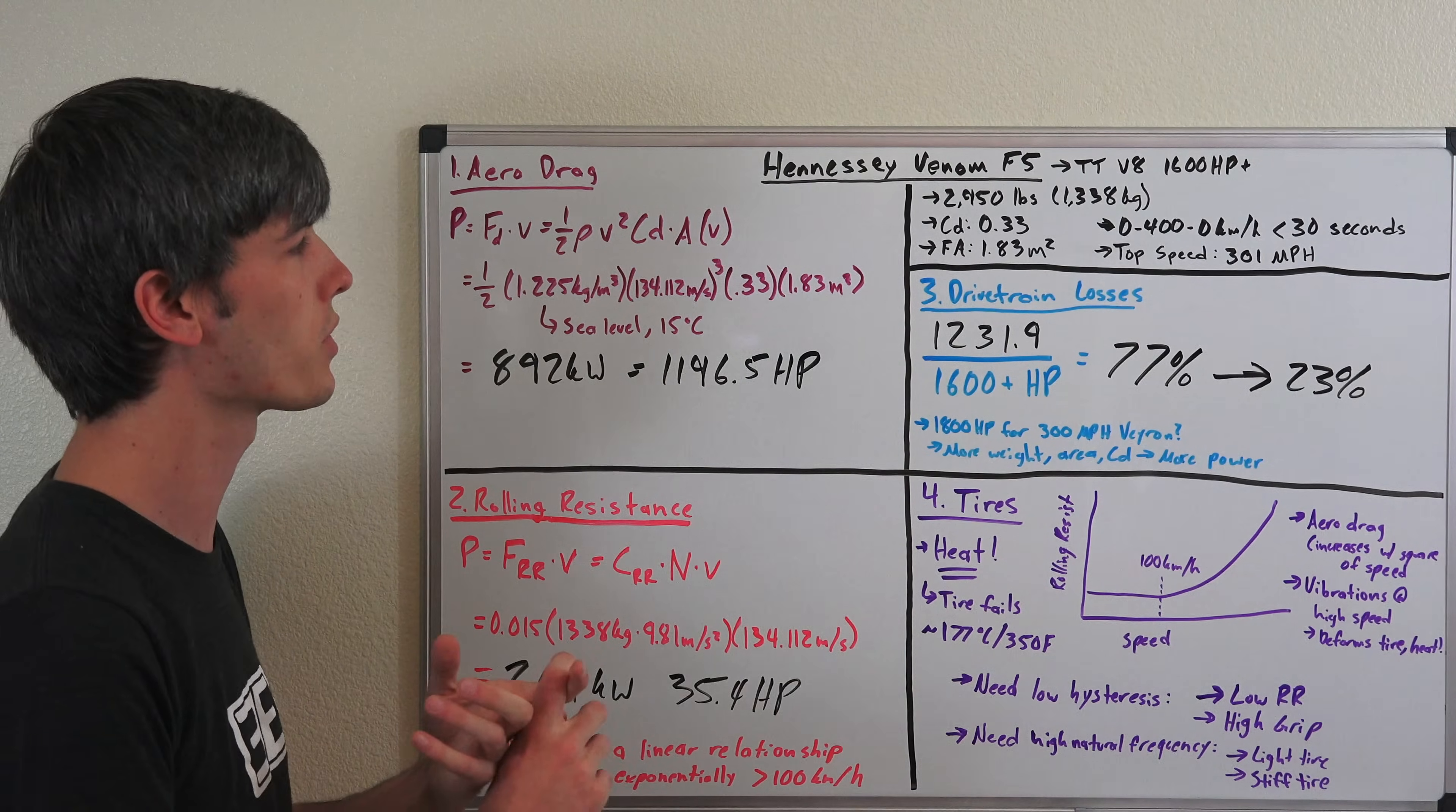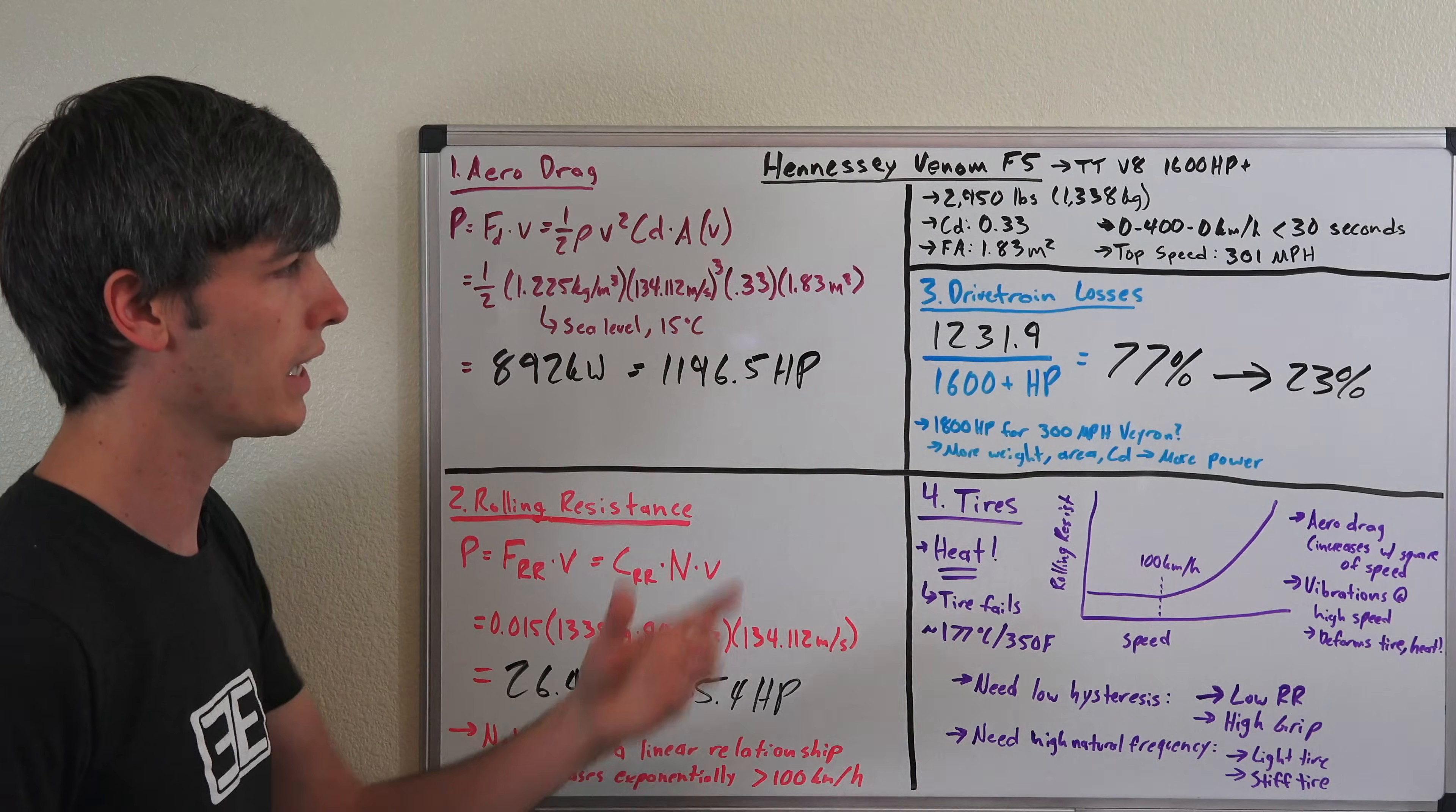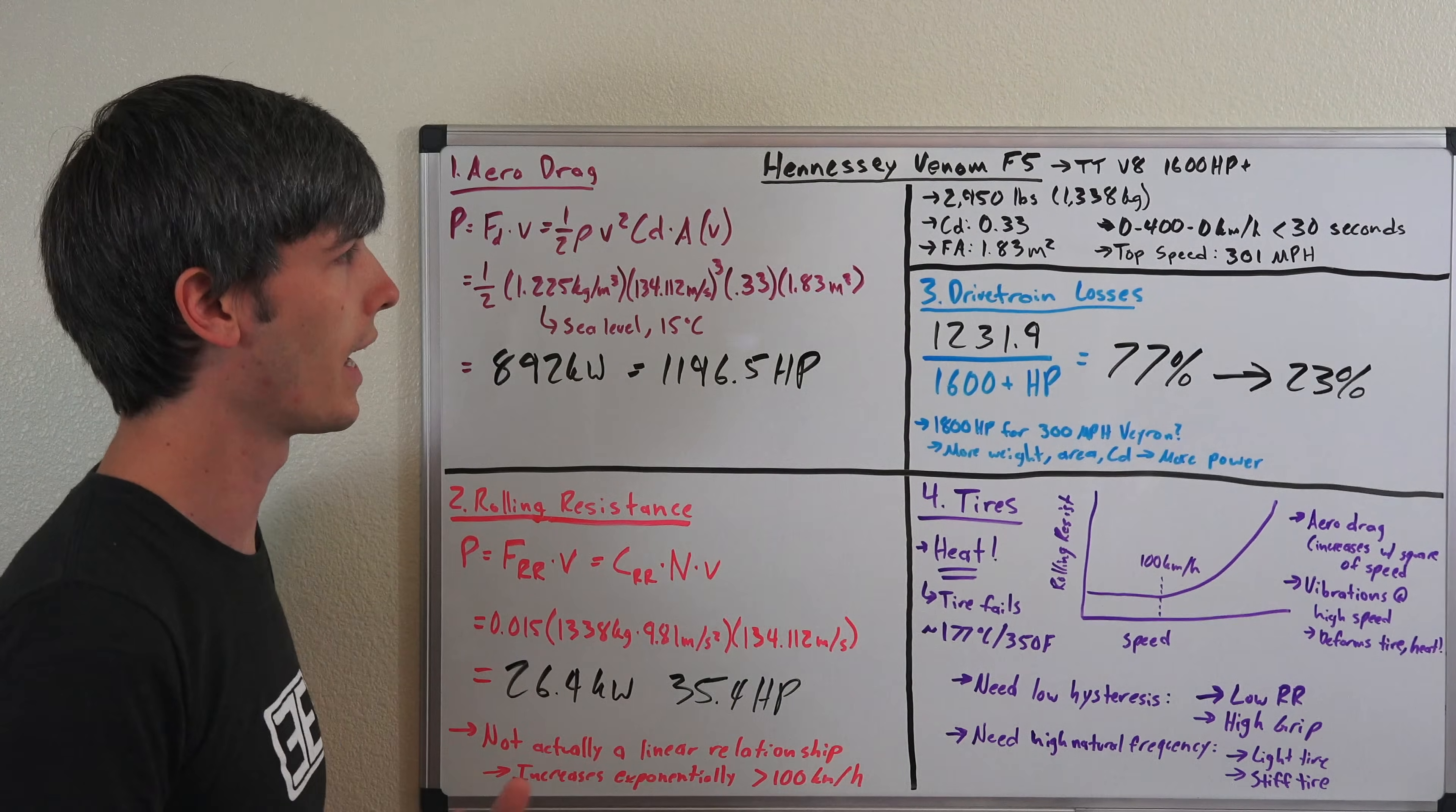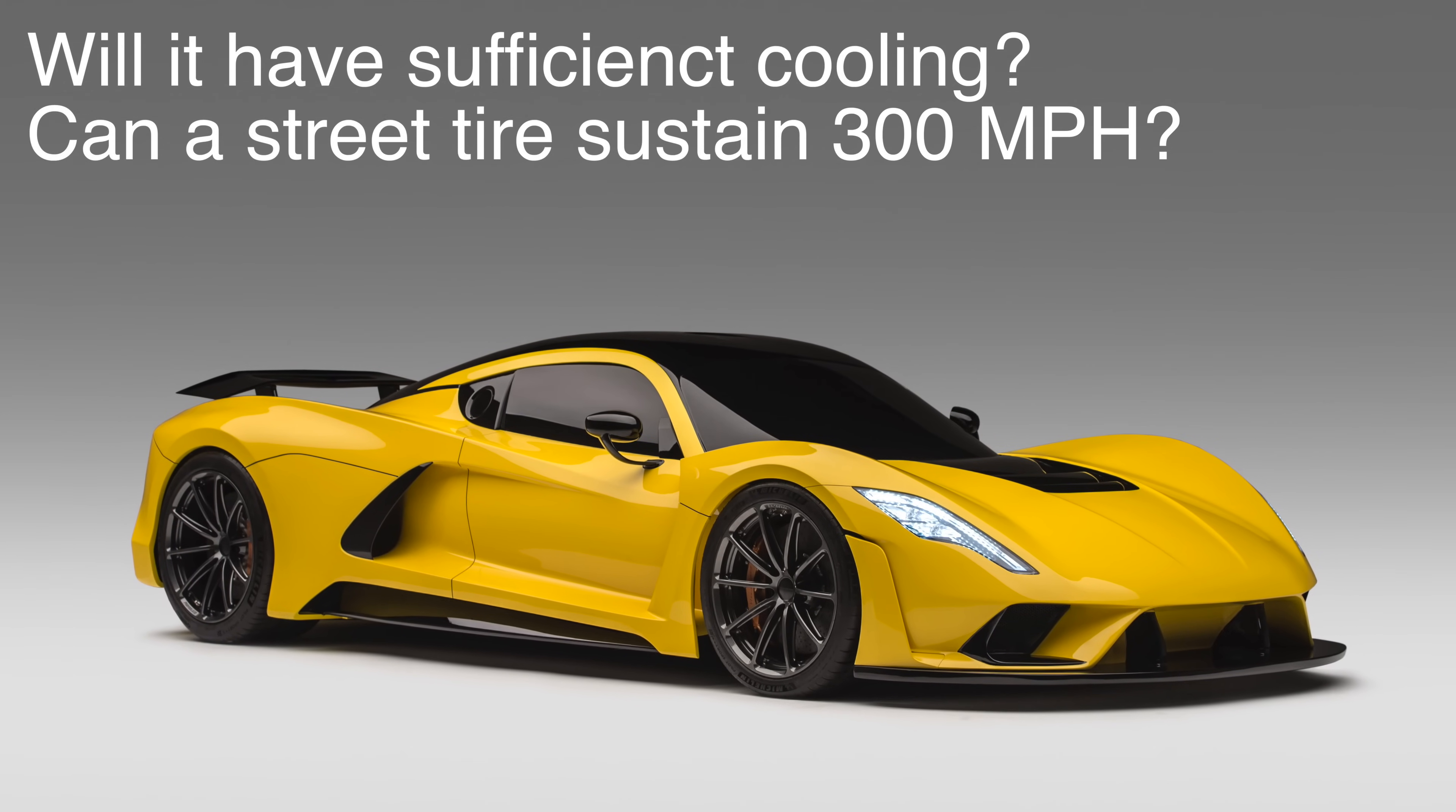But overall from a power standpoint, the math does show that reasonably this number could be significantly higher and they would still have plenty of leftover power, even with drivetrain losses, to hit it. So from a twin-turbo V8 1,600 horsepower-plus engine and the low curb weight, what's really impressive honestly is that they got their drag coefficient so low and their frontal area so low.